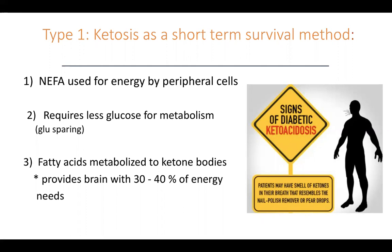However, ketone bodies will build up and they are acidic, which can lead to ketosis or diabetic ketoacidosis. The ketosis in diabetes is much more severe than in a ketogenic diet because of a lack of insulin. In people who aren't diabetic, they won't have as severe ketosis because they have a little bit of insulin even if they're not eating carbs. The three ketone bodies produced are beta-hydroxybutyrate, acetoacetate, and acetone.